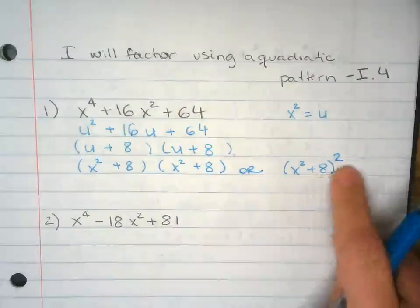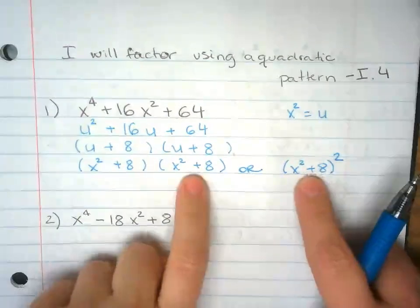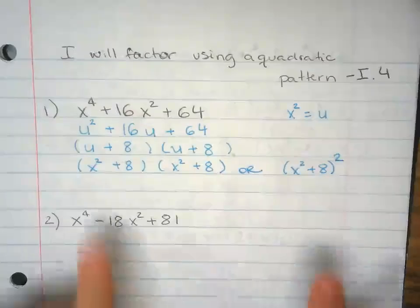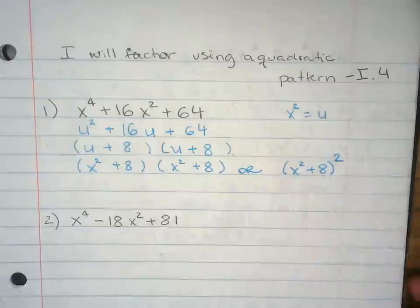multiplies itself these many times. So x squared plus 8 times x squared plus 8 or this times itself twice. So if you want to leave the answer like this, that's fine. If you want to write your answer like that, it's cool too.